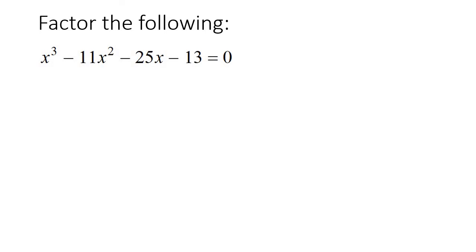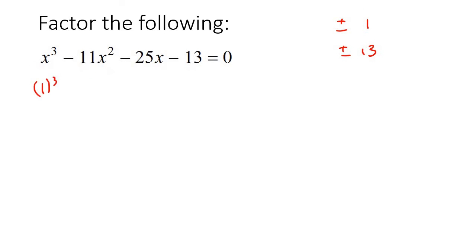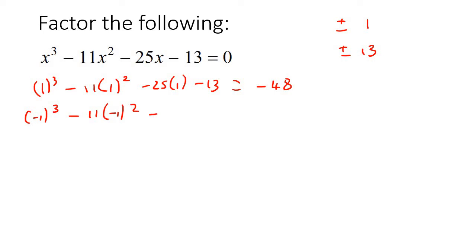Here's our next example. Remember, grouping isn't going to work. So what we're going to do is take the factors of this number — that would be 1 and 13, and then use the positive and negative of each one. Start with positive 1, go plug that into the places of x — we're hoping to get an answer of 0. That does not give us 0, that gives us negative 48. So then try negative 1. If you had to go work out this, you get 0. Then you're going to use synthetic division with that negative 1.